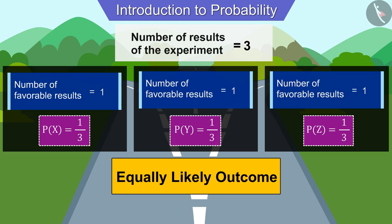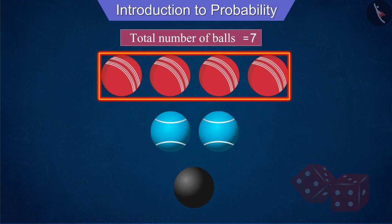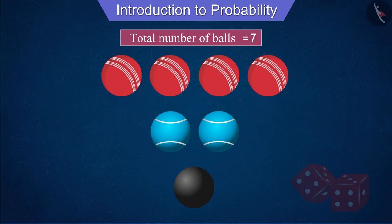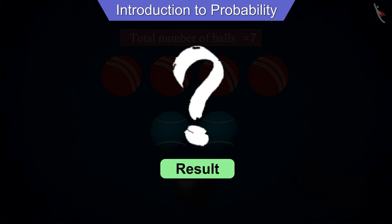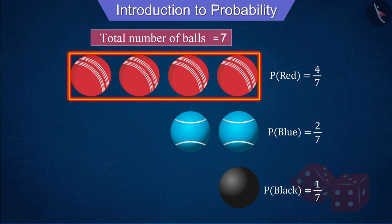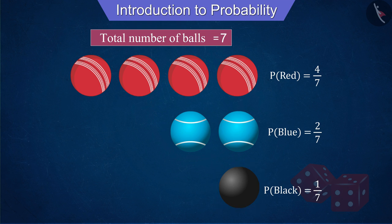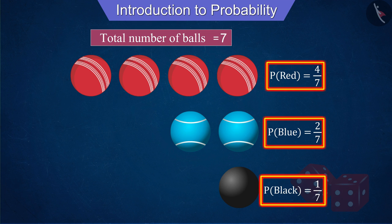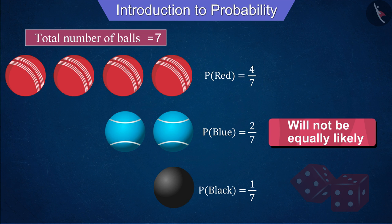Can you think of a situation in which the results are not equally likely? Suppose Joseph has seven balls in a bag, including four red, two blue, and one black ball. If Joseph picks out a ball without looking inside the bag, will the results be equally likely for all three colors? Due to the large number of red balls, it is most likely to come out. The probability of the blue ball is less than the red but more than the black. The black ball will be the least likely. Therefore the results will not be equally likely.